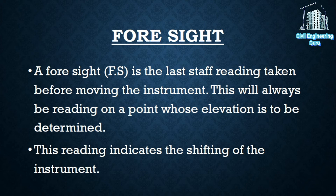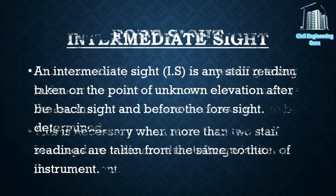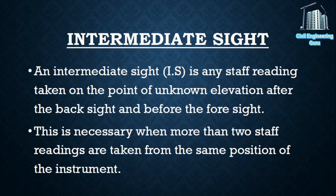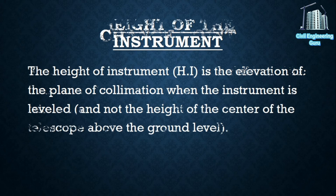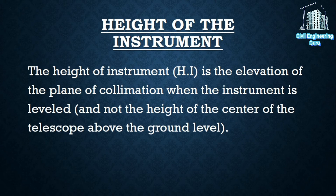Intermediate sight: an intermediate sight is any staff reading taken on a point of unknown elevation after the back sight and before the foresight; this is necessary when more than two staff readings are taken from the same position of the instrument. Change point: a change point indicates the shifting of the instrument; both back sight and foresight are taken on a change point.